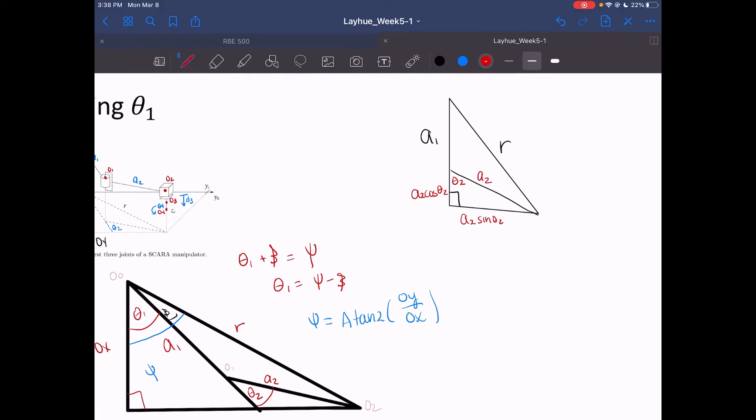So now we can just find beta, which is here, as explicitly as atan2 of the y—so it's going to be this one—a2 sine of theta2, all over a1 plus a2 cosine of theta2. And one thing to note is that these need to add.